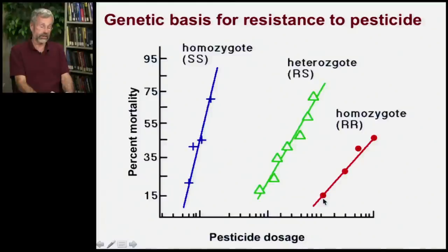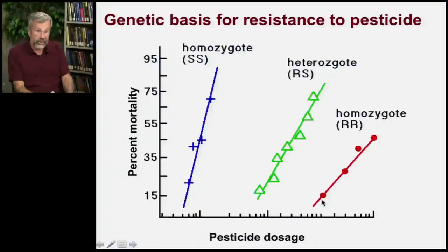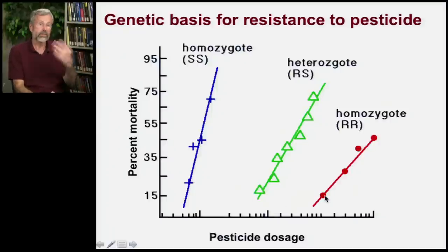After several generations, the only thing left in the population will be the resistance alleles. And now you have had to increase your dosage — on a logarithmic scale — a hundred times to still be able to control the insect.